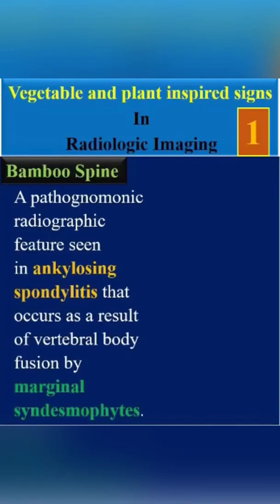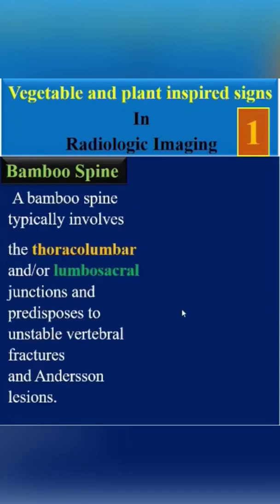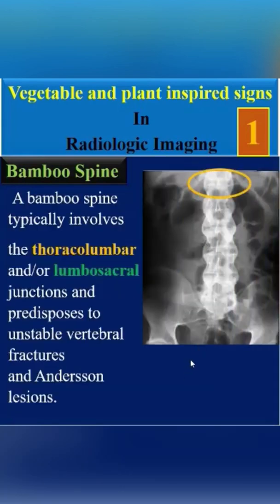Bamboo spine is a pathognomonic radiographic feature seen in ankylosing spondylitis that occurs as a result of vertebral body fusion by marginal syndesmophytes. It typically involves the thoracolumbar and/or lumbosacral junction and predisposes to unstable vertebral fractures and Anderson lesions.